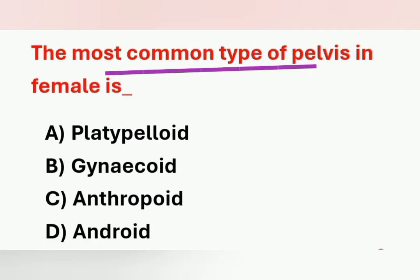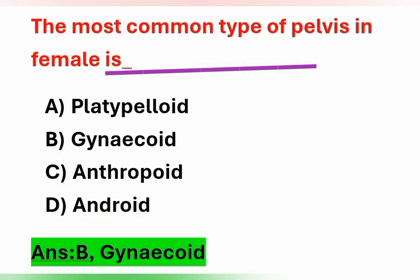Next question: the most common type of pelvis in females is which option? Option A – platypelloid. Option B – gynecoid. Option C – anthropoid. Option D – android. The most common type of pelvis in females is the gynecoid pelvis. Option B is the correct answer. We have discussed questions from previous year papers and important expected questions to help you prepare. If this is useful, please share the videos with your friends.